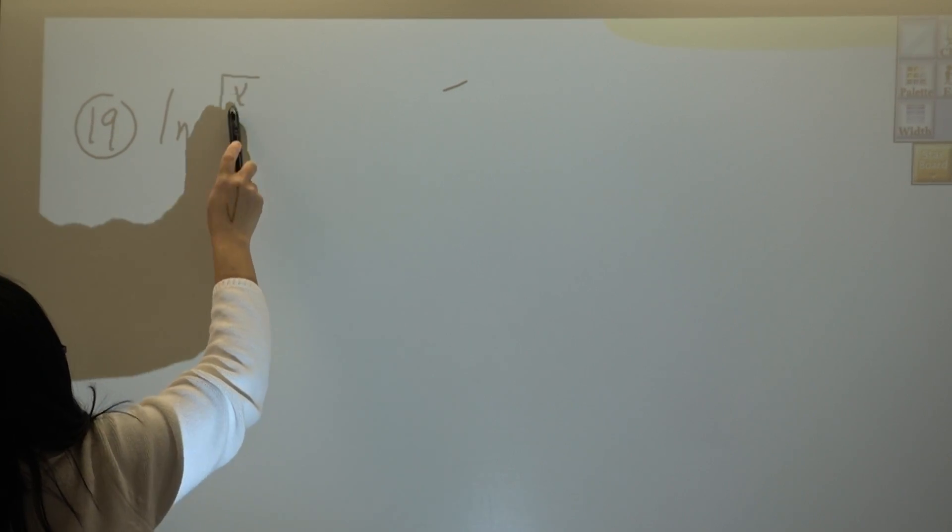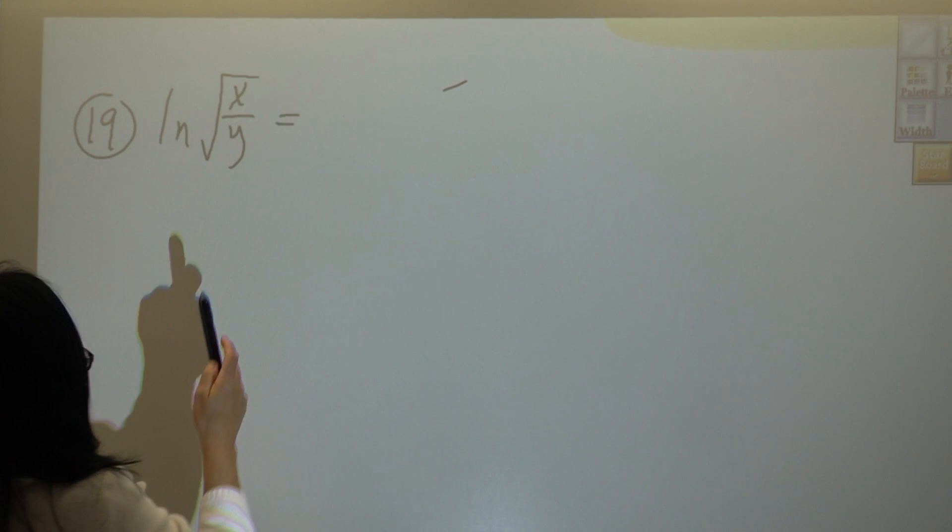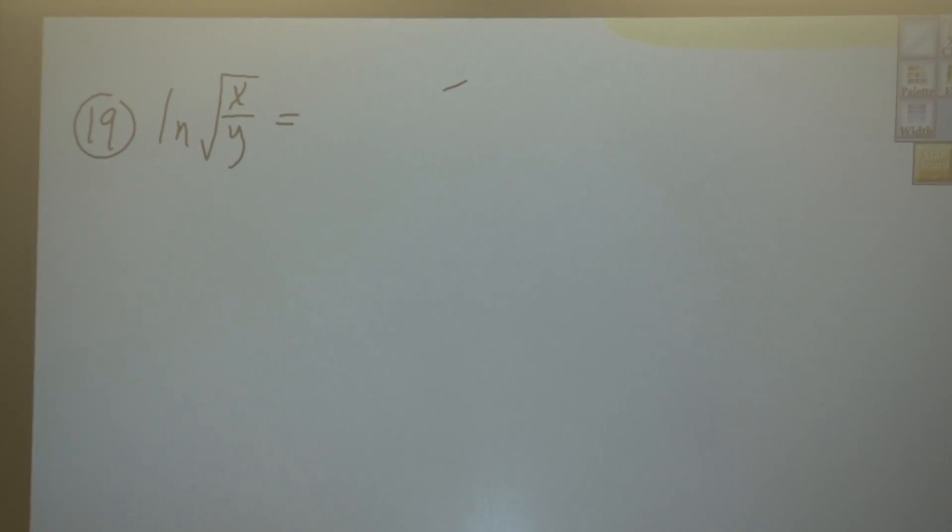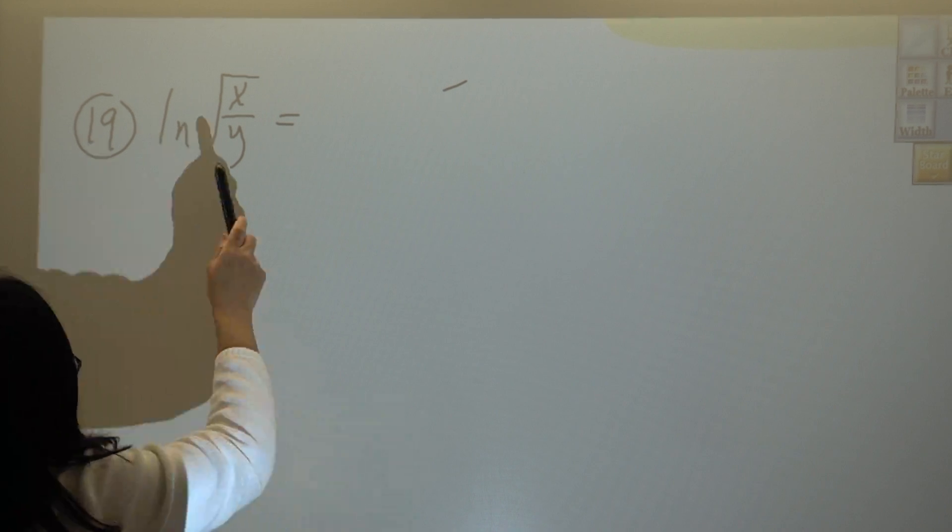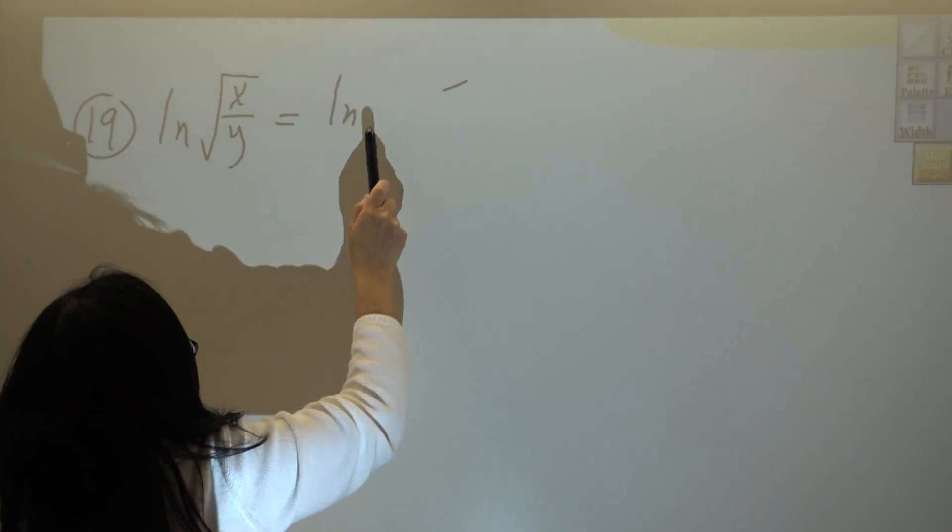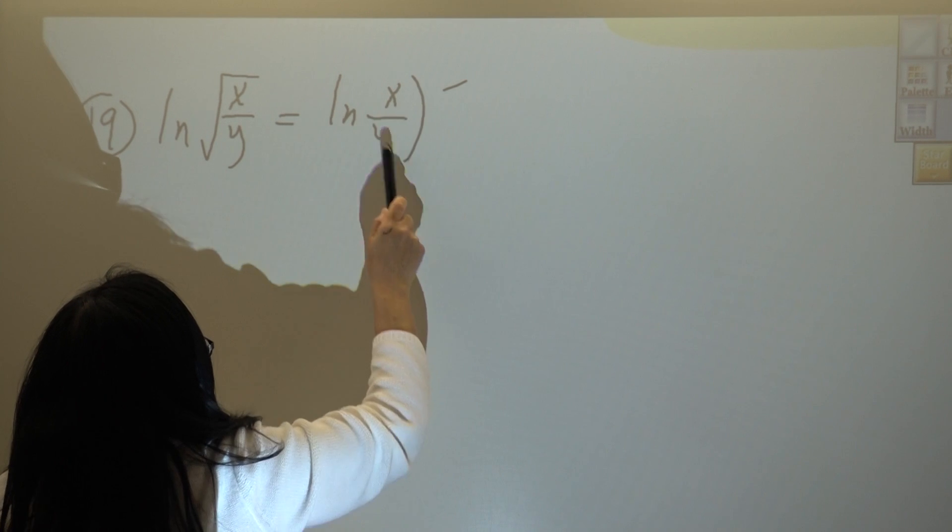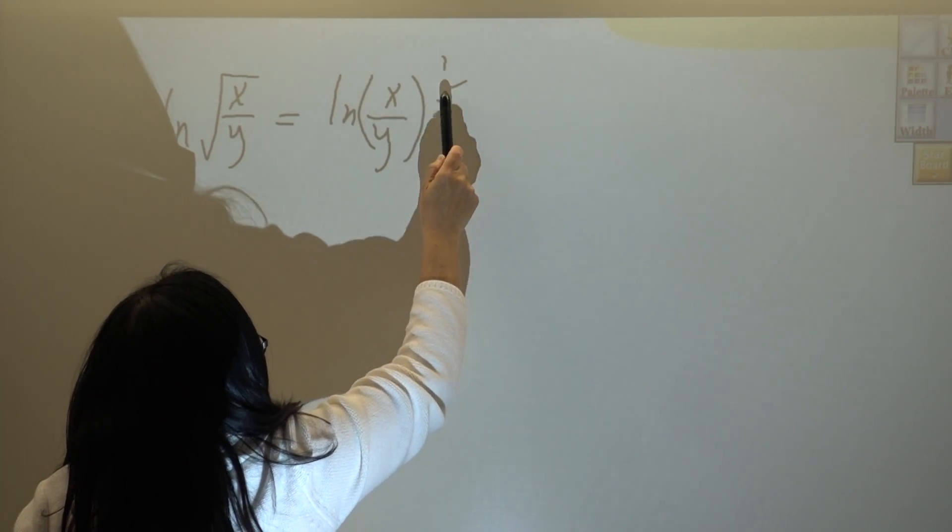Natural log represents log base e, so we're going to use the same rules for natural log. This is natural log of x over y to the one half, right?